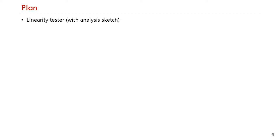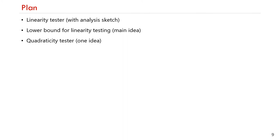The plan for the rest of this talk is to first introduce our linearity tester with a sketch of the analysis, then introduce the main idea for our lower bound on linearity testing, introduce one idea from our quadraticity tester and its analysis, and conclude with our result on the impossibility of testing sortedness. Let's jump into linearity testing.